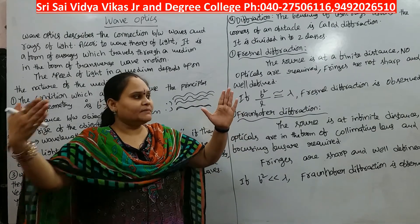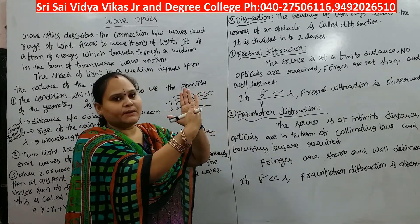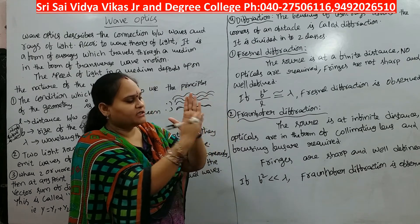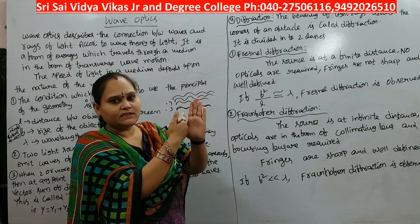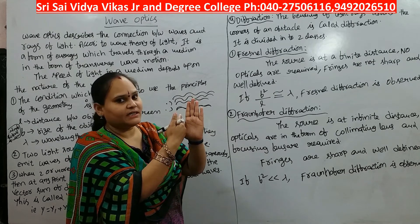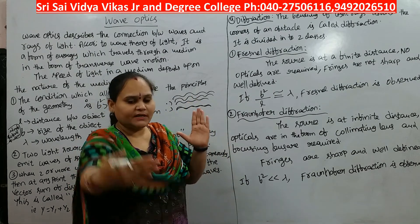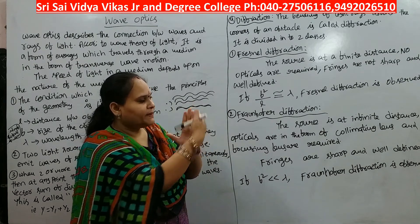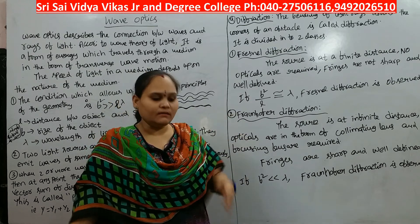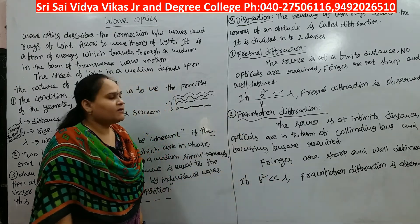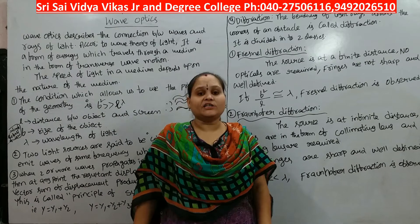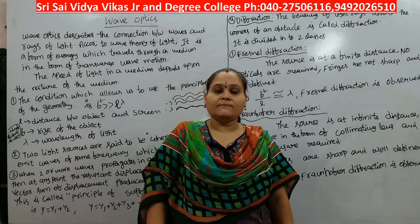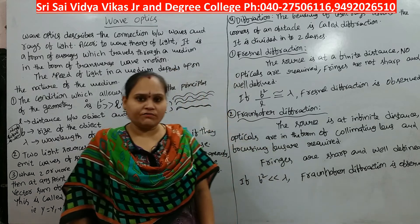The bending of a light ray around an obstacle is nothing but diffraction of light. The light traveling in a direction will bend at the edges of the obstacle and then continue. This effect is diffraction of light. In diffraction, we have two different classes: Fresnel diffraction and Fraunhofer diffraction.